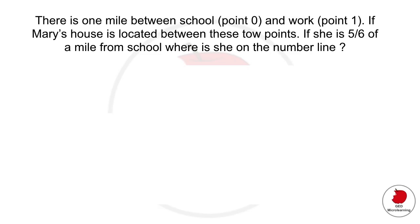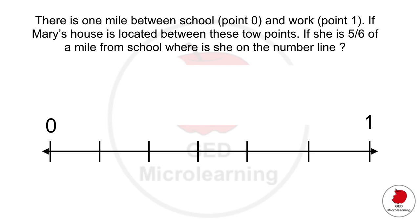Let's do another word problem. They're telling us that there's one mile between school, which is going to be 0, and work, which is going to be 1. And if Mary's house is located between these two points, if she is 5 sixth of a mile from school, where is she on the number line? So we know that the school is at 0, work is at 1, and she's 5 sixth from 0.